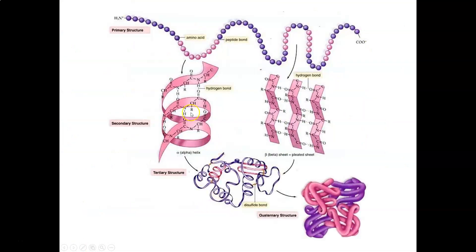As a review, a protein is a sequence of amino acids. Which amino acids and in what order they are arranged is part of the primary structure. That causes the R groups on each amino acid to interact with each other and start forming secondary structures, such as alpha helices, beta sheets, and random coils.